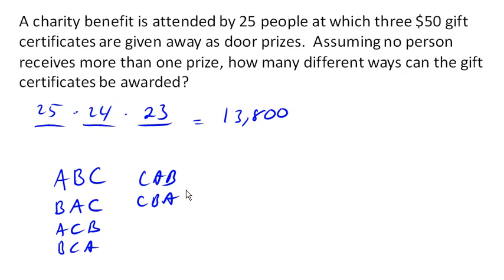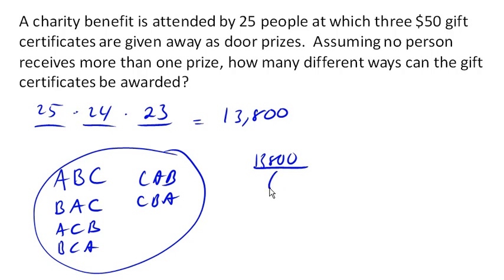So in order to compensate for this, we end up needing to take our 13,800 different permutations and divide it by six to come up with 2,300 what are called combinations. Combinations are what we call it when order doesn't matter. In other words, it doesn't matter who is chosen first.